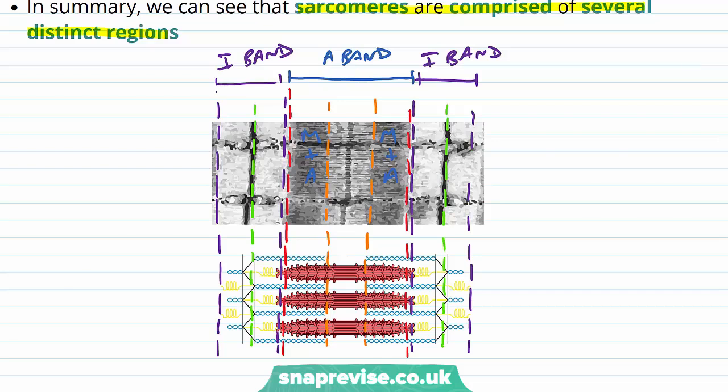And that lighter area, the orange area within the A band, is the H zone. And inside the I bands, denoted by the green line, is the Z line, or the Z disc.